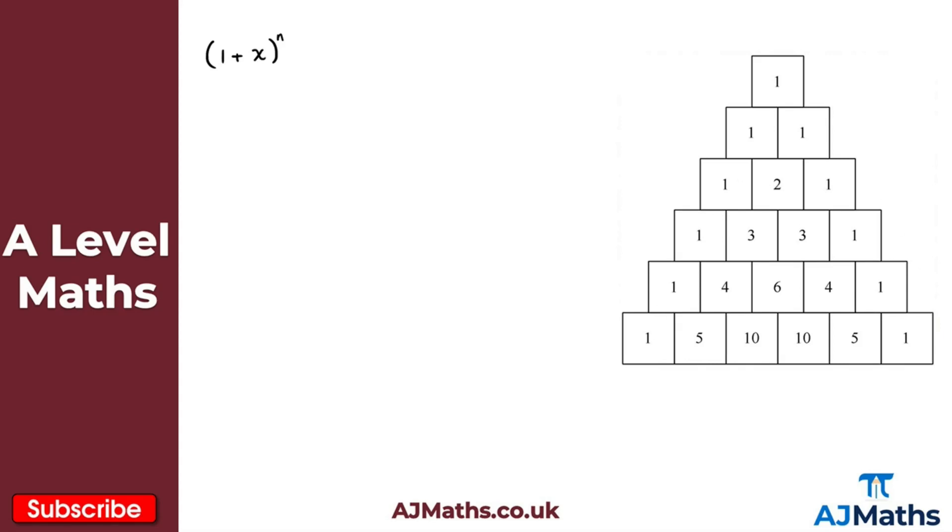And essentially from here, the way this works is as we go down it's made up by the sum of the two above. So this two here is equal to the one plus the one, this three is equal to the one plus the two.